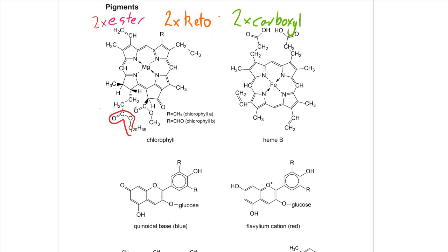There are the esters. Keto — that's three carbons in a row with a double bond in the middle to oxygen. Two of those.